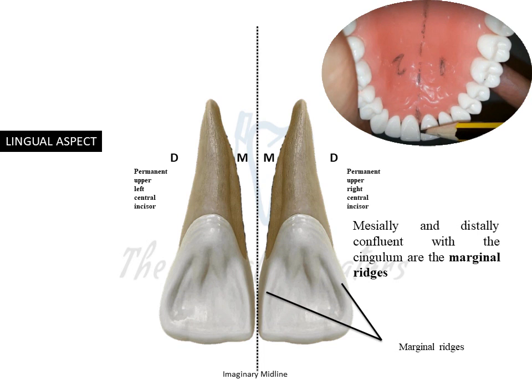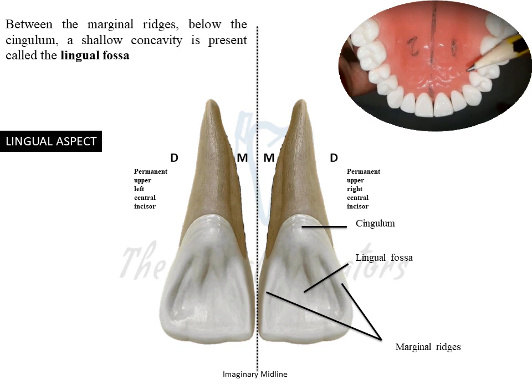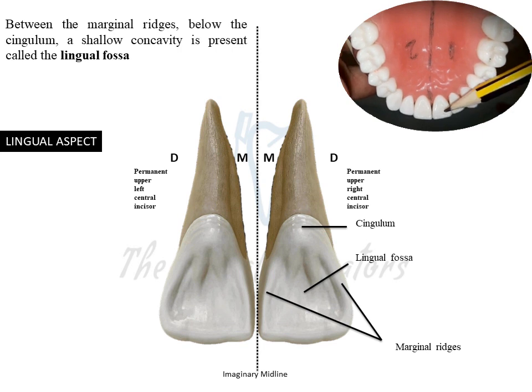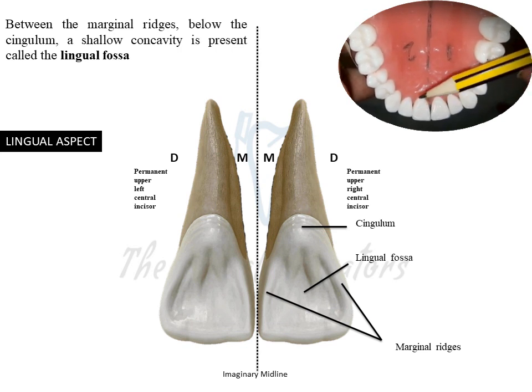Between the two marginal ridges and the cingulum on the lingual aspect, there is a concavity referred to as the lingual fossa — a linear depression observed on the lingual surface. You can see that below the cingulum and between the marginal ridges there is a shallow concavity for each of the maxillary central incisors.